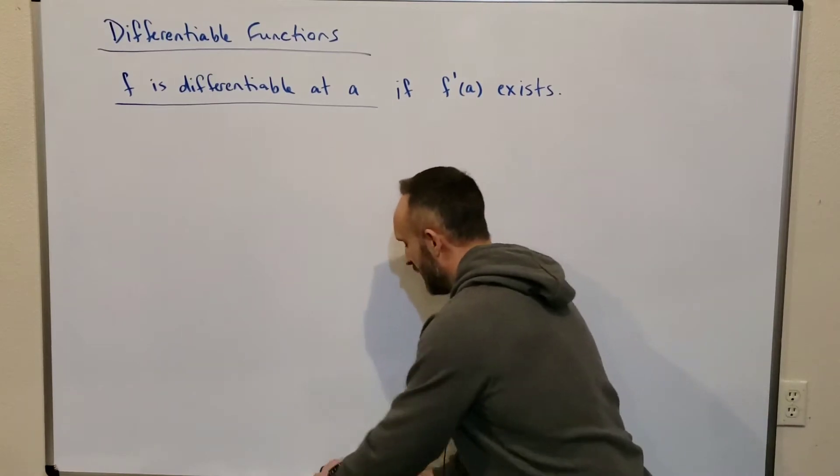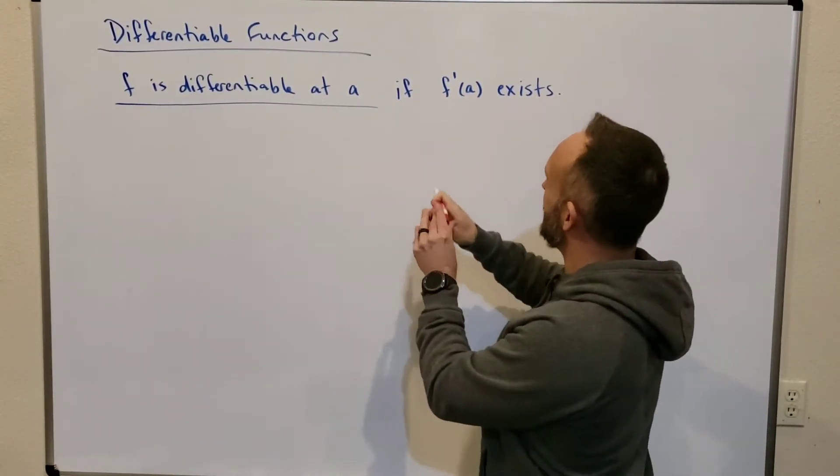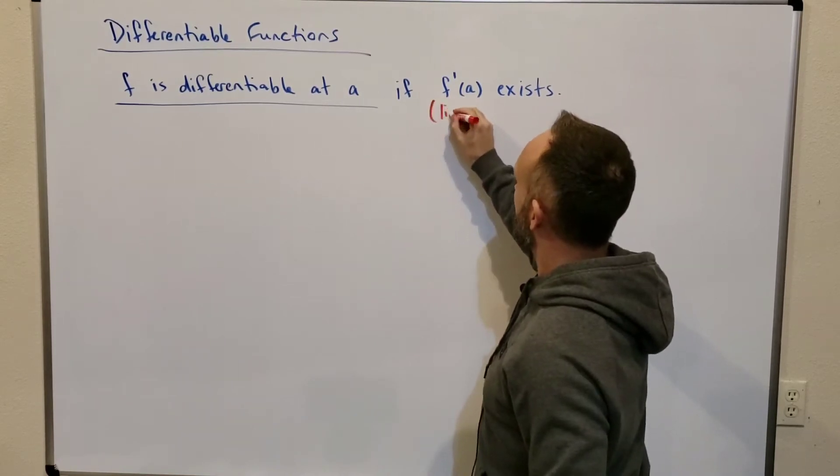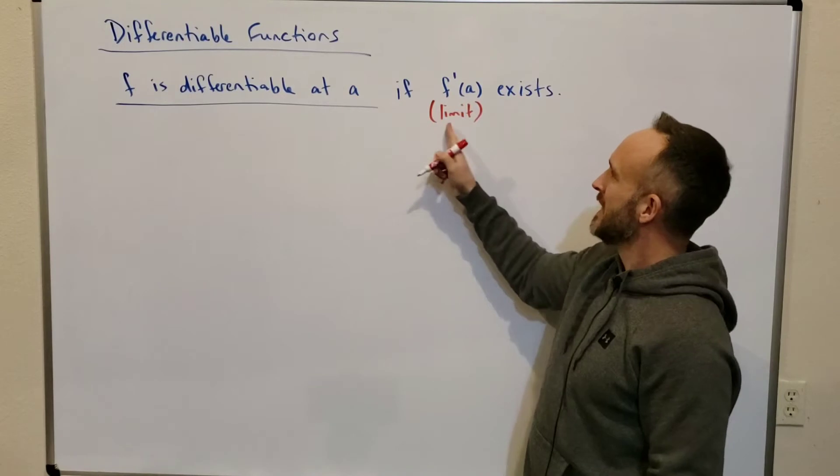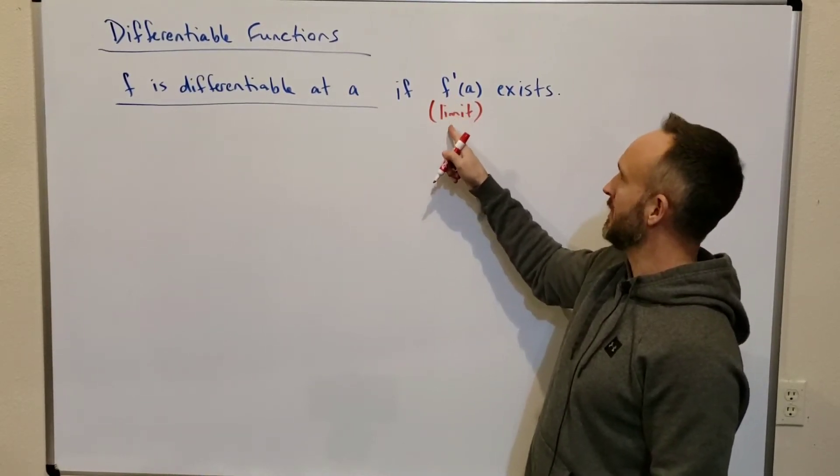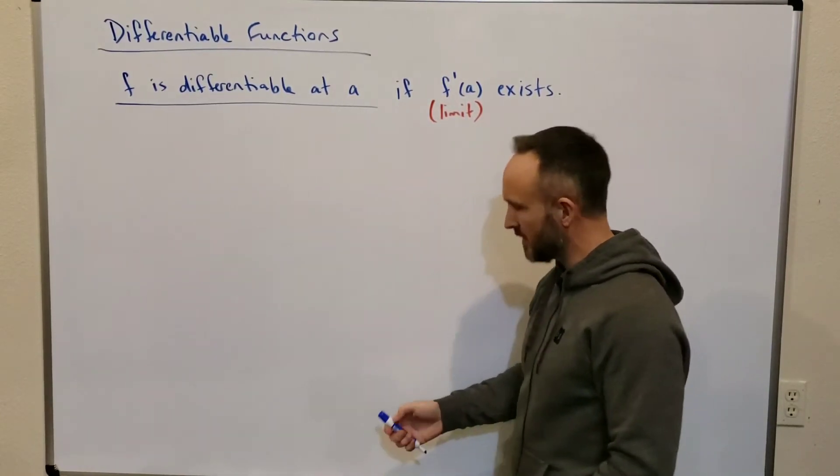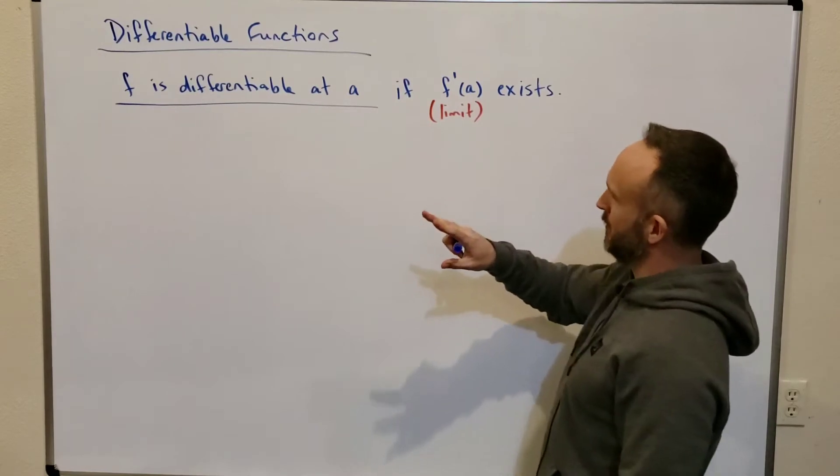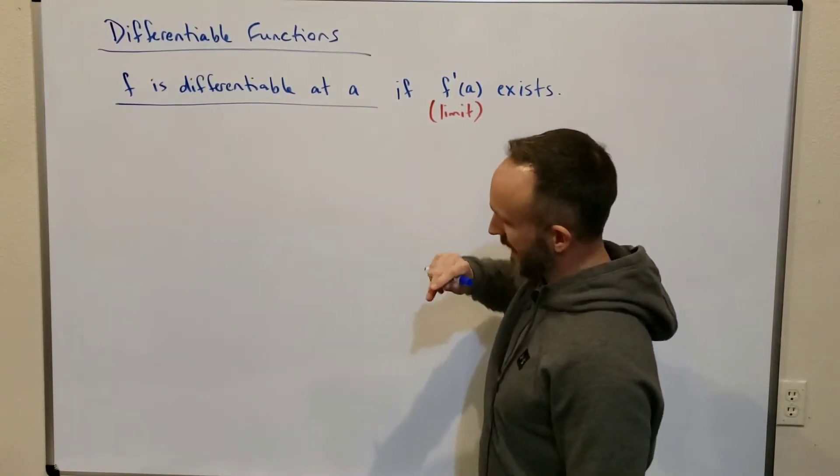Now, don't forget that f prime of a is a limit. So in other words, a function is differentiable at a value if the limit, this particular limit, the derivative limit, exists. So let's look at a couple quick examples. Let me pause for a moment. This is how you say a function is differentiable at a value.